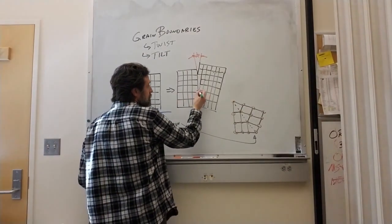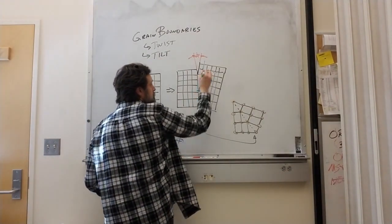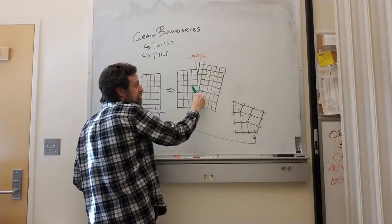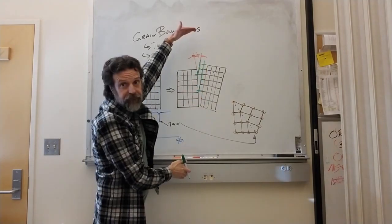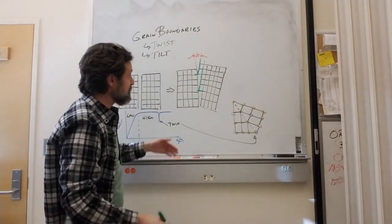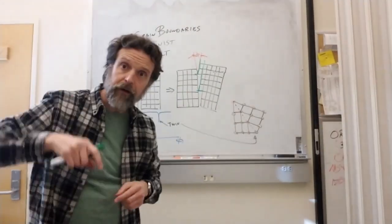So here is a dislocation - you've got an extra half plane above and nothing below, and then here is another. This is a fairly long wall made of a series of dislocations stacked one on top of the other.